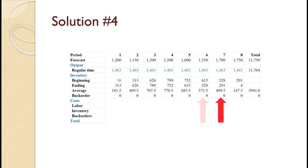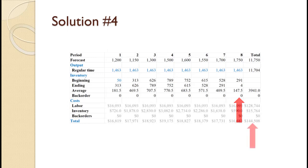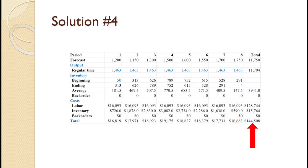For period 7, we need 1,700 but only produce 1,463 so inventory drops from 528 to 291 for an average inventory of 409.5. For period 8, we need 1,750 but produce only 1,463 so inventory drops from 291 to 4 for an average inventory of 147.5. It would be acceptable to only produce 1,459 so ending inventory drops to 0. The resulting plan has a total cost of $144,508. Do you understand how to get this or do you need to review prior tutorials?